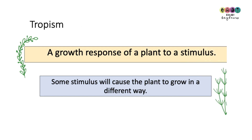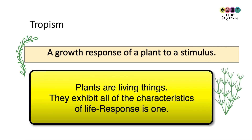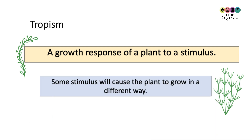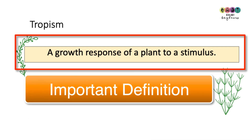Plants are living things, and like all living things they respond — it's one of the characteristics of life. The way plants usually respond is by changing how they grow. This is known as a tropism, defined as a growth response of a plant to a stimulus.